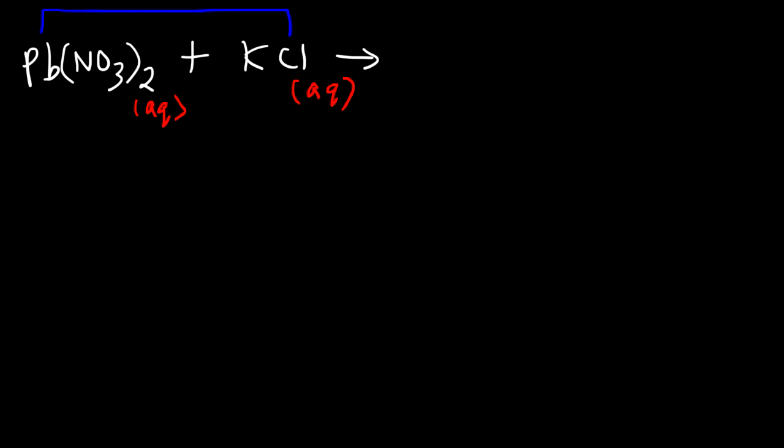Lead is going to pair up with chlorine and potassium is going to pair up with nitrate. Potassium has a positive one charge, nitrate has a negative one charge. If the magnitude of the charges are the same then you can combine those ions in a one-to-one ratio. So one of the products will be KNO3.